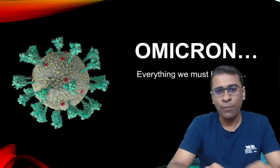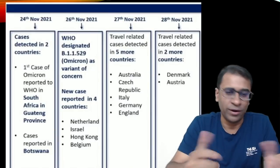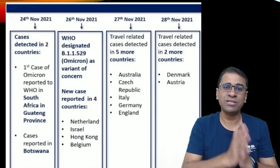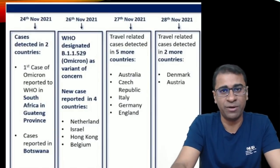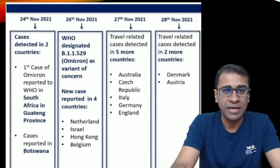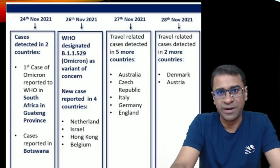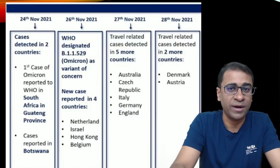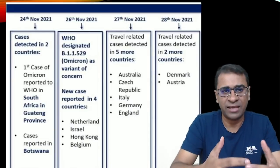Let's start. Omicron — everything we should know. Ever since the first case of Omicron came into effect on 24th of November 2021, it has been really spreading out. More than the virus, what has spread across is the news of the virus, and we are worried about what will happen. So we can view some timelines we should all know.